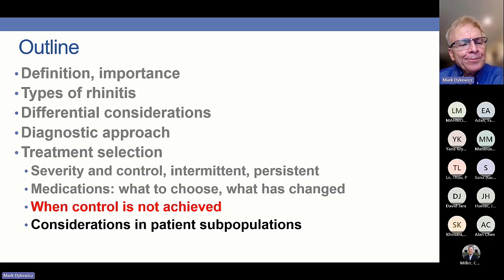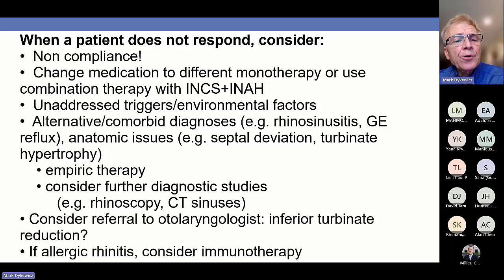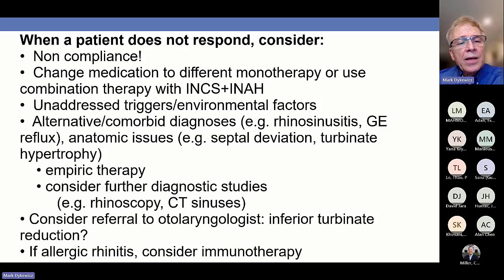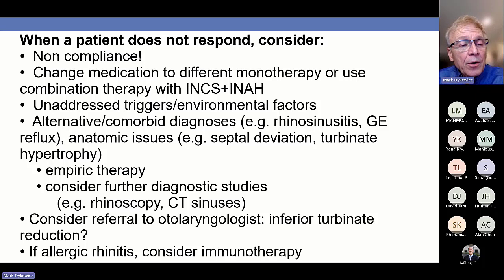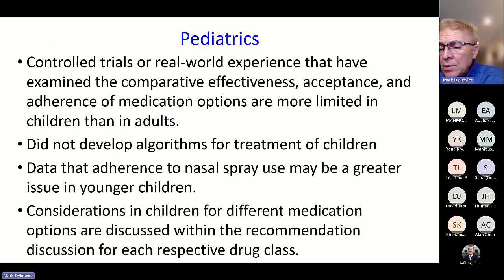When you don't have control, check for adherence issues, consider moving to a different monotherapy or using combo therapy such as nasal steroid with nasal antihistamine. Make sure environmental factors are being addressed, and consider whether rhinosinusitis, acid reflux, or anatomic issues are going on. That may require empiric therapy, diagnostic studies, and referral to an otolaryngologist for possible inferior turbinate reduction. For allergic rhinitis, consider allergen immunotherapy.